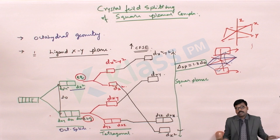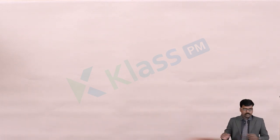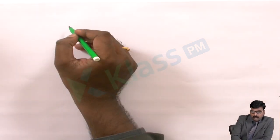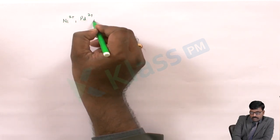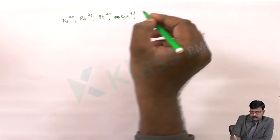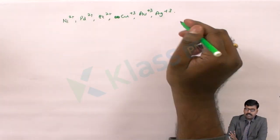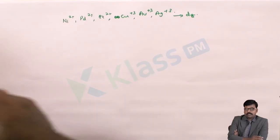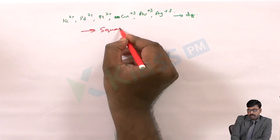Most of the time, the splitting of the d orbital in a square planar affects the d8 configuration most. The d8 configuration — like metals of Ni²⁺, Pd²⁺, Pt²⁺, Cu⁺, Cu³⁺, Au³⁺, and Ag³⁺ — will have the d8 electronic configuration and will exhibit the square planar structure most of the time.